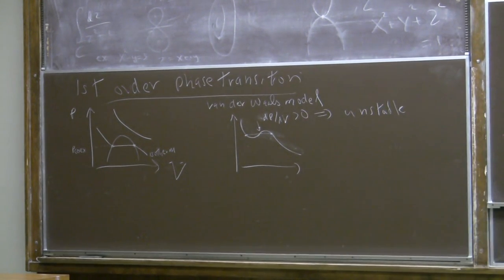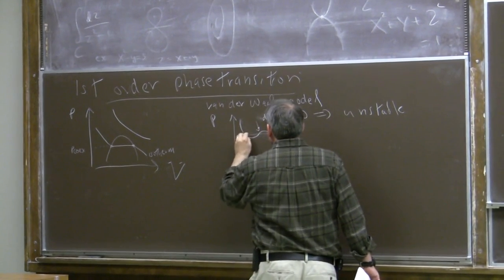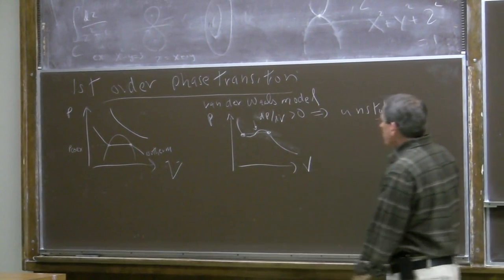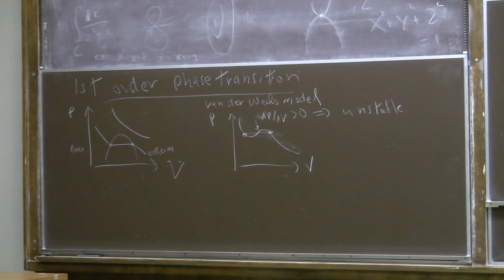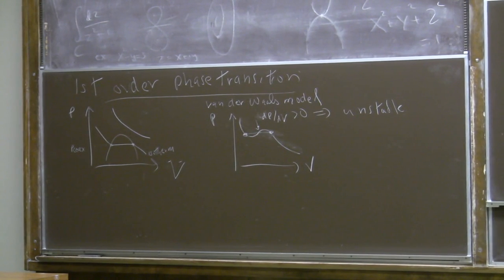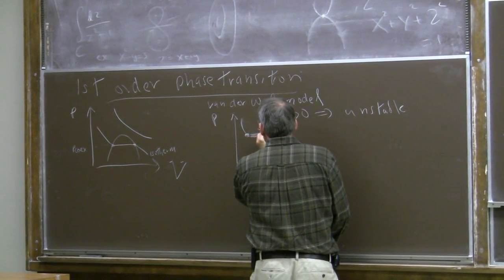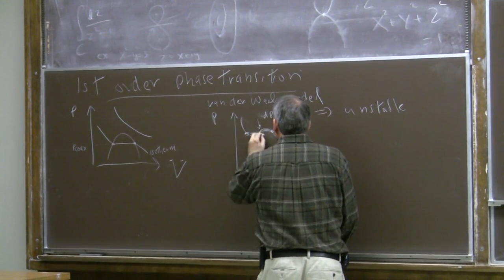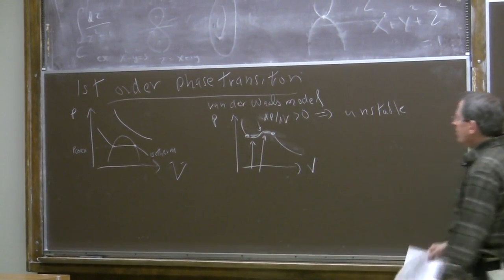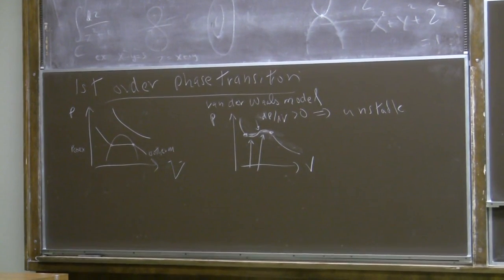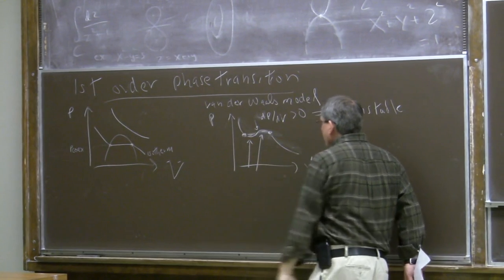What actually happens in those intermediate values of the volume is that there's coexistence between gas and liquid phases described by these two points. The way we determine the coexistence pressure given this isotherm is using Maxwell's equal area construction: the area above the horizontal line matches the area below.